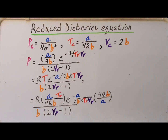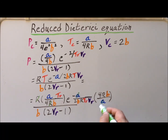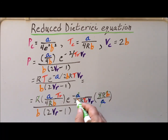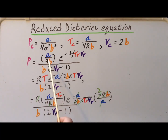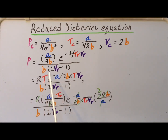Next, we notice that we can do a considerable amount of canceling. We can cancel R with R, cancel A with A and RB with RB, and 4 with 2, leaving 2 up there. So that gives us that the pressure is equal to A over 4B times e to the minus 2 divided by T sub R V sub R, divided by B times the quantity 2V sub R minus 1.